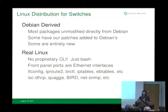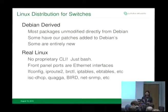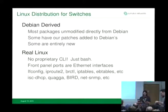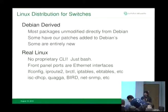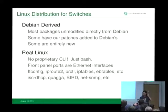You can use any program that works on Linux on the Cumulus Linux switch. For example, for DHCP, we just use ISC DHCP. For routing protocols, instead of writing our own OSPF and BGP, we just use Quagga. But if you prefer Bird, you can just install it and use it.